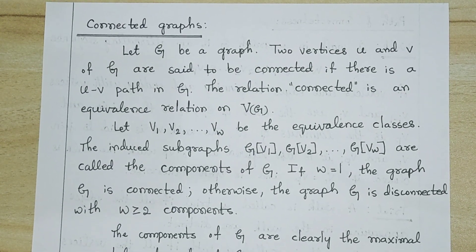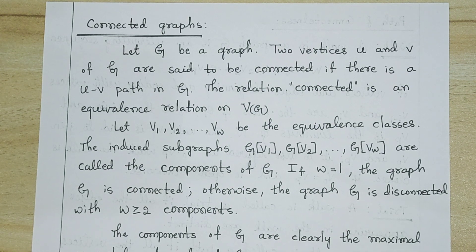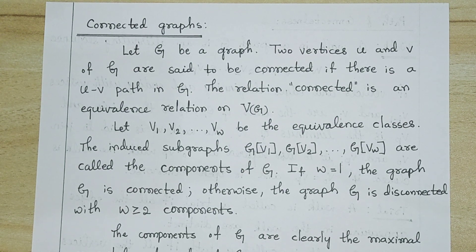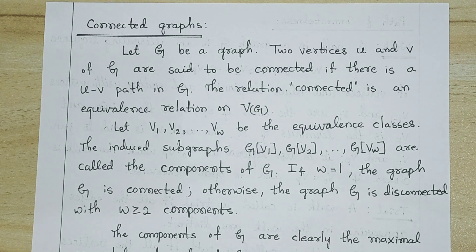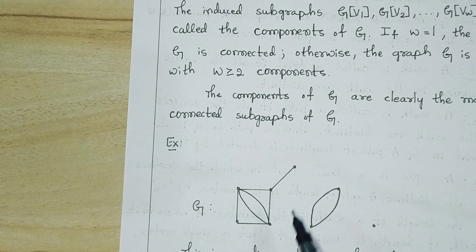The components are clearly the maximal connected subgraphs of G. Note: a clique is a complete subgraph of G — that is different from a component. Look at this example: in this graph we can see three components, so the graph is not connected.